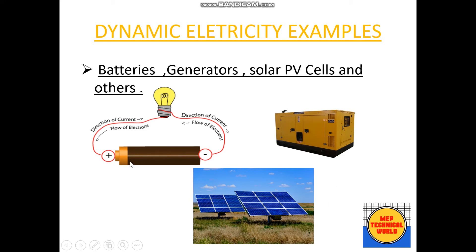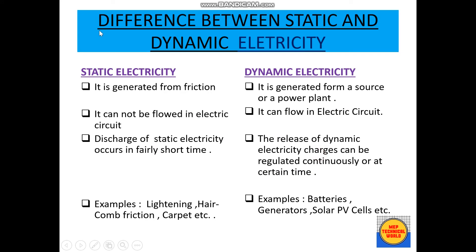We can see in the picture the difference between static and dynamic electricity. Static electricity is generated from friction, while dynamic electricity is generated from a source such as a power plant.